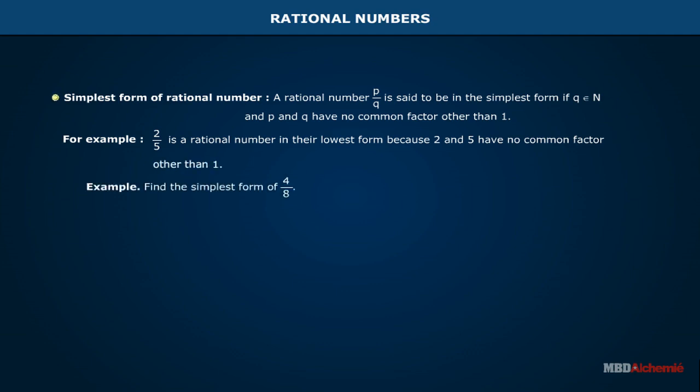Example. Find the simplest form of 4 by 8. Solution. 4 by 8 equals 1 into 2 into 2 upon 1 into 2 into 2 into 2. On cancelling out the 2s, we get 1 by 2. The simplest form of 4 by 8 is 1 by 2.